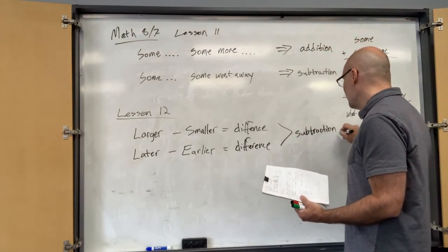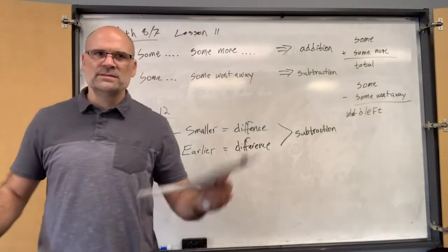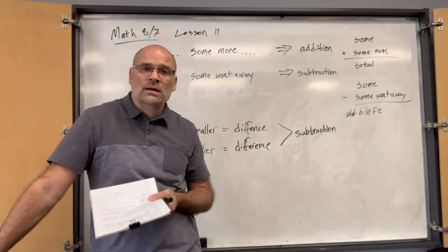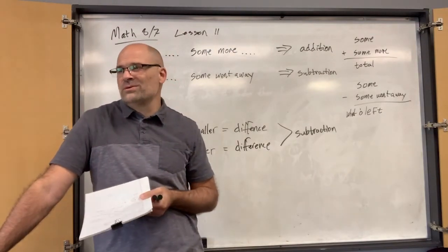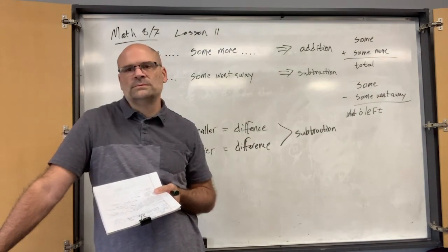So these guys are subtraction problems. It doesn't mean that you're always going to subtract, right? So let's say that someone died in 1980 but they were 23 years old. When were they born? That's actually a gravestone.